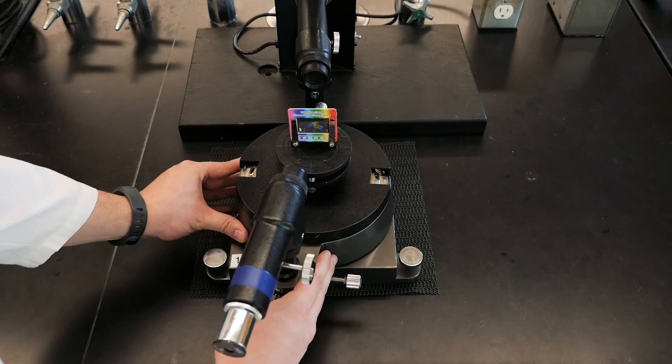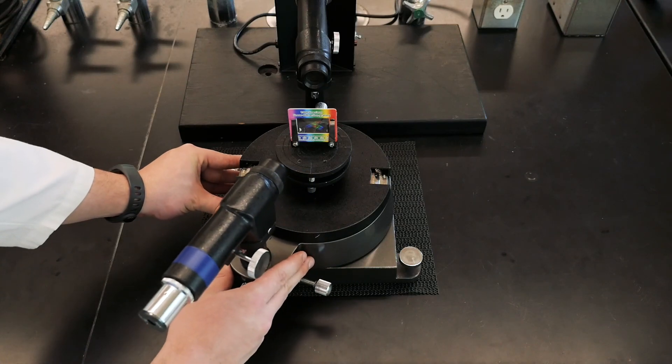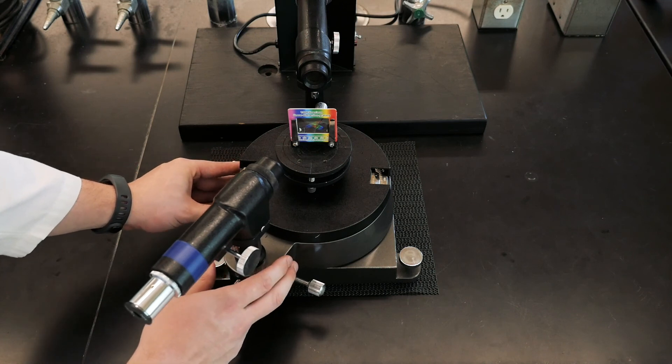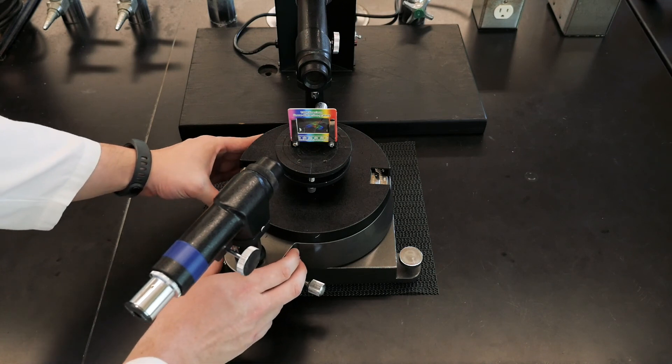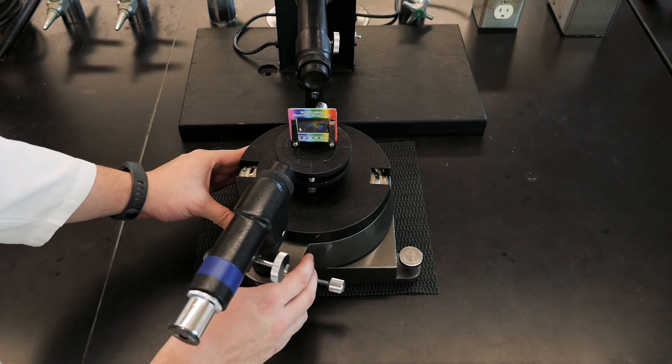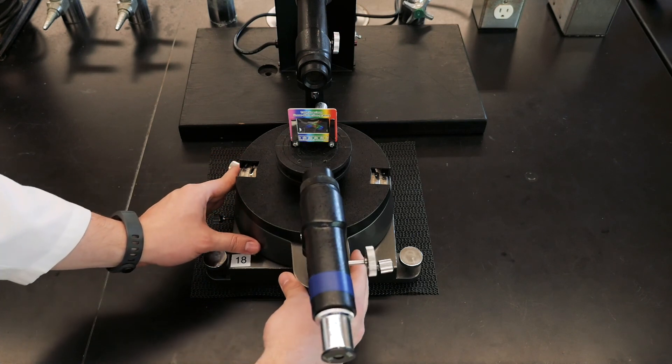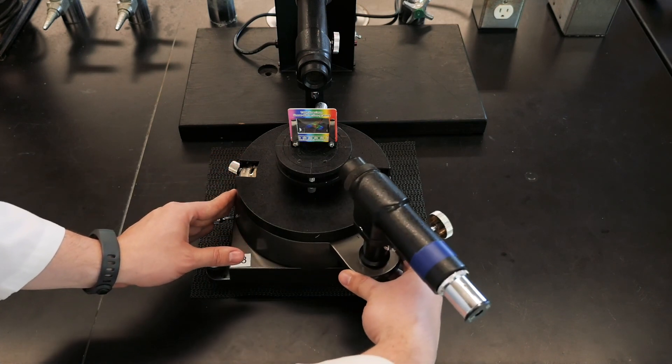So when going in this direction, be sure to subtract your reading from 360 to get the true angle of diffraction. Once you've measured the diffraction angles in both the clockwise and counterclockwise directions, simply average them to arrive at your final measurement.